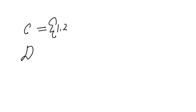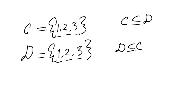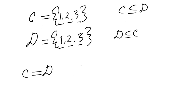Suppose we have two more sets C and D. The elements of C are 1, 2, 3 and elements of D are 1, 2, 3. What do you think — is C a subset of D, or is D a subset of C? As every element of C is also an element of D, by definition C is a subset of D. And the same thing is true for D — D is a subset of C. So we can say each set is a subset of itself.